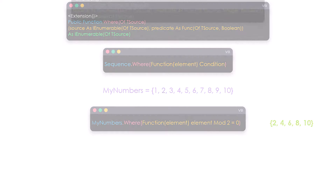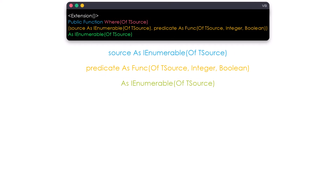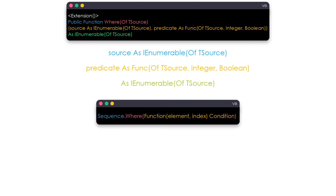Let's now move on to the second overload. This overload has the exact same inputs and outputs as the first overload, but with one additional input parameter. It's of type integer and it represents the index of the elements, which should be used with the predicate. Inside the lambda expression, the first parameter represents the elements inside the sequence, and the second parameter represents the index of the elements. The index is zero-based, meaning the first element has index 0, the second has index 1, and so on.